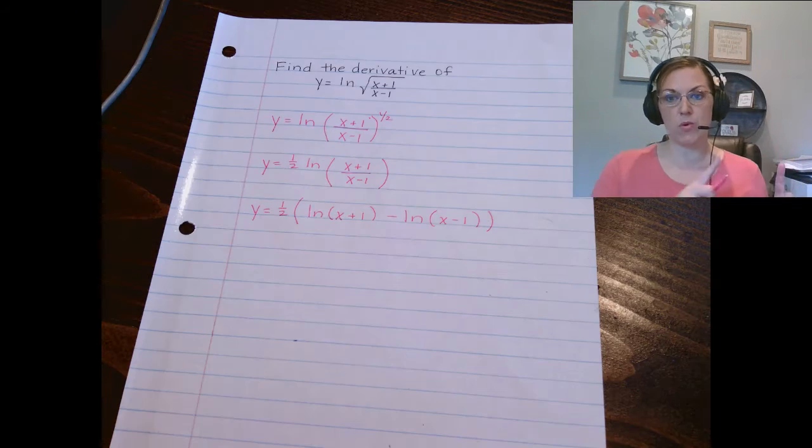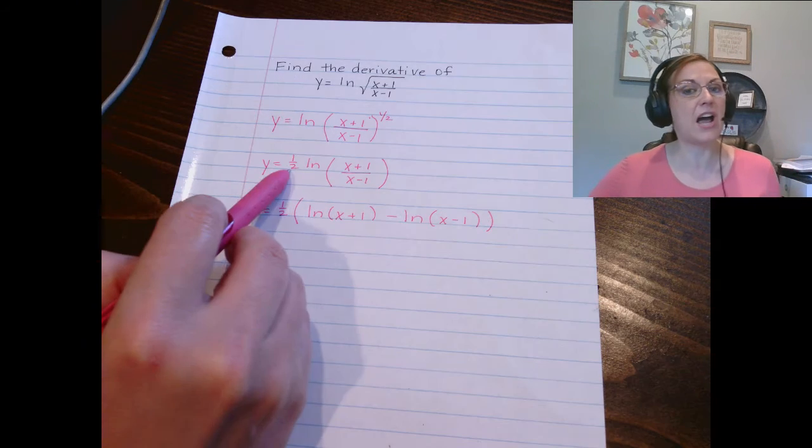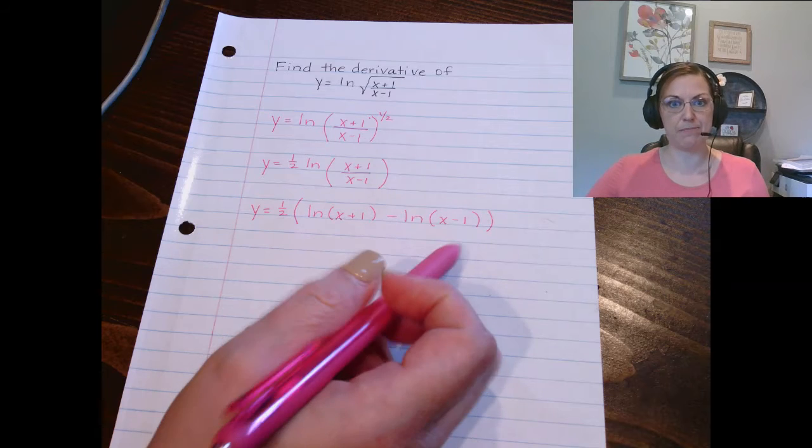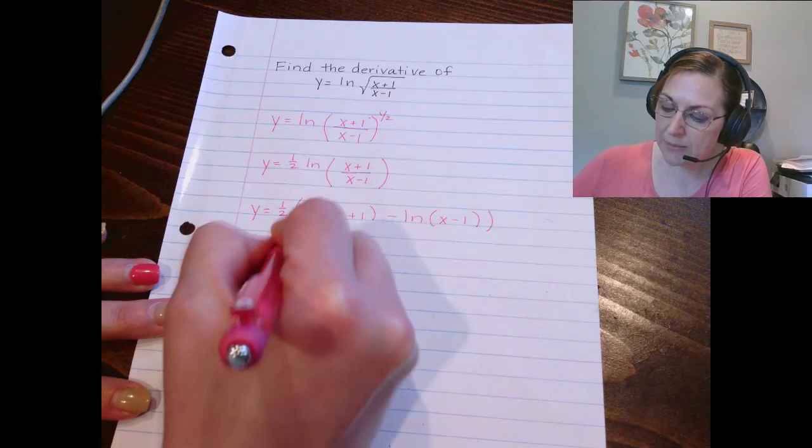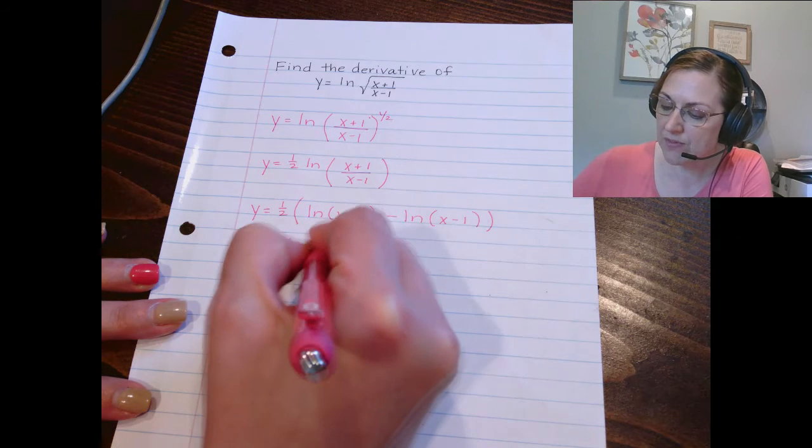Notice that I put it in parentheses with the one half, because this one half is going to have to be distributed to both of them. And I think that's probably going to be my final step, is I'm going to distribute it to both of them.